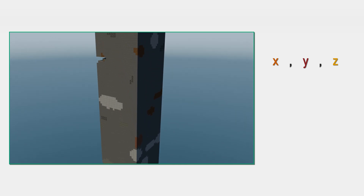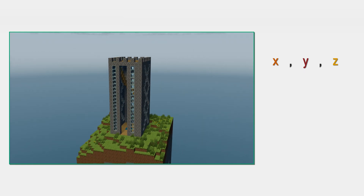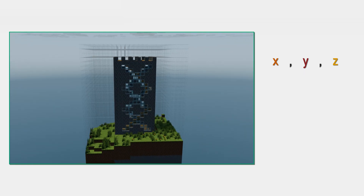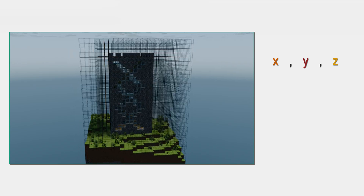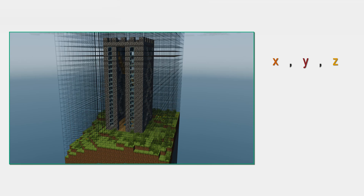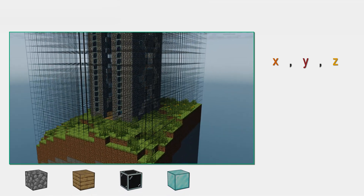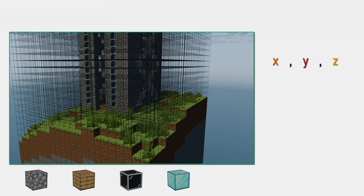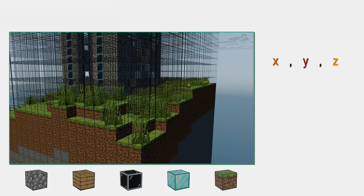The script loads the map using the Amulet Core Python library developed by the Amulet team, allowing the map data to be accessed. The script then scans through the defined area column by column, starting from a Y value of 320 all the way down to minus 64. It looks for the block IDs we have given it — for our example, we would say cobblestone, planks, glass, and to also get the upper ground layer of our superflat world, the grass block. All block IDs can easily be found online.